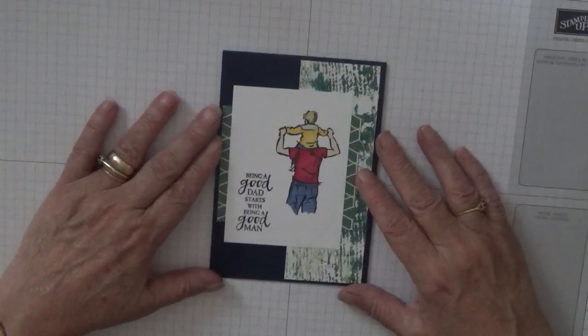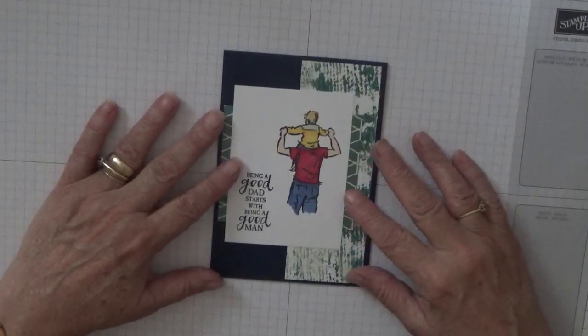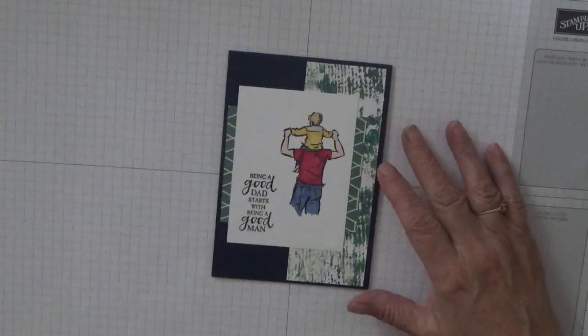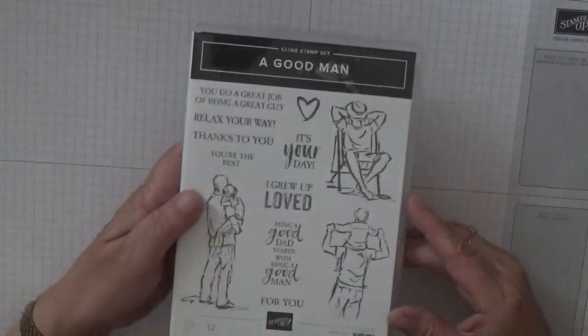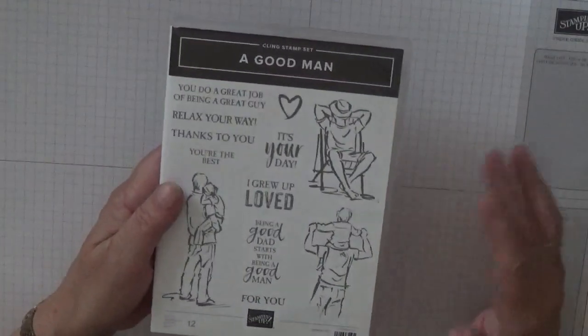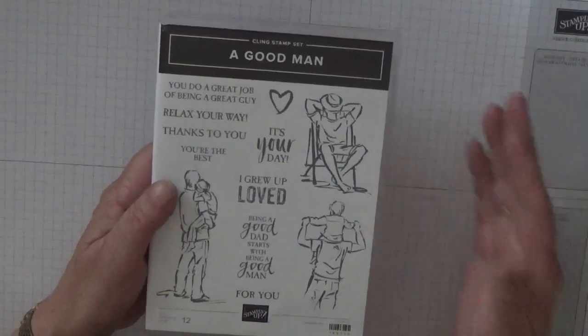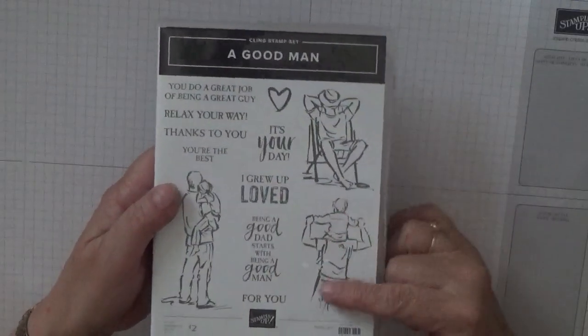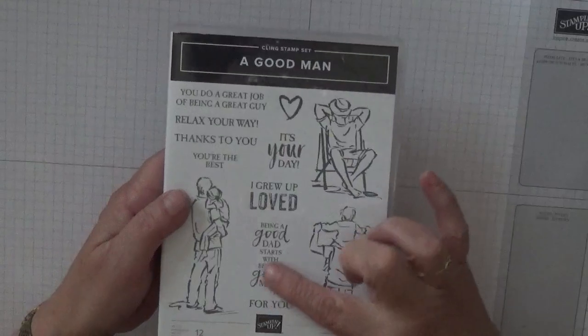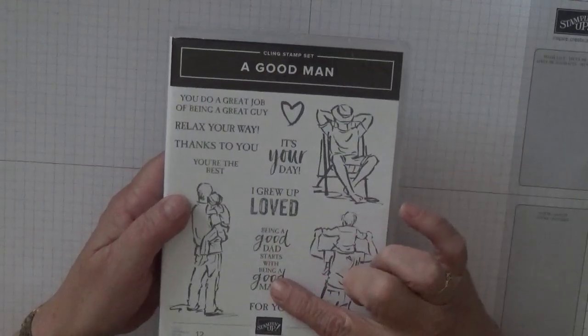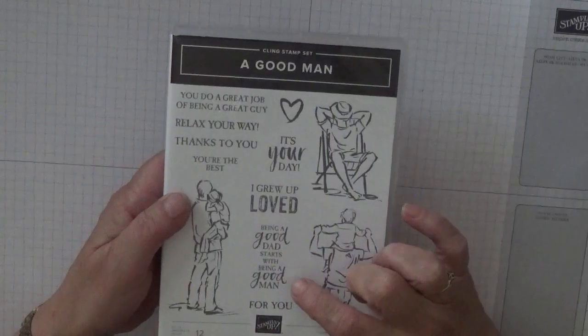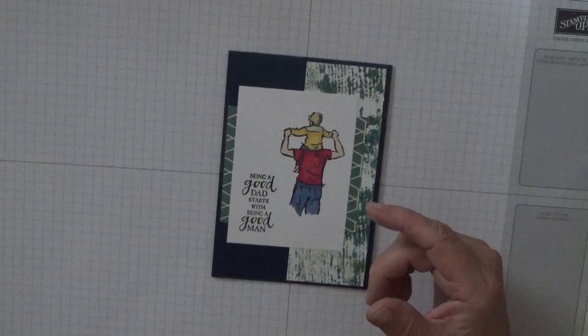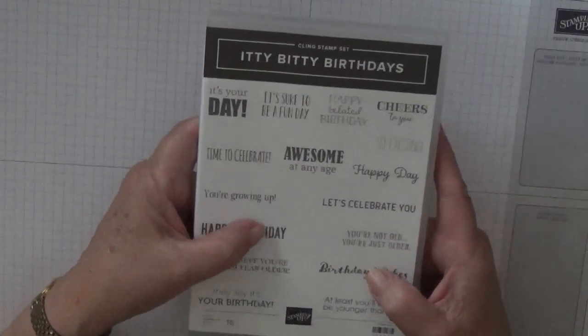I don't know what order these will be uploaded, but you will see over the coming weeks that I have done one of each image out of the A Good Man stamp set. Now I record a batch at a time, so that's why I'm saying this because I've already done him and him and now it's time for this one. So I'll be using this image and this sentiment being a good dad starts with being a good man, and I'll also be putting happy birthday inside from the itty bitty birthdays.